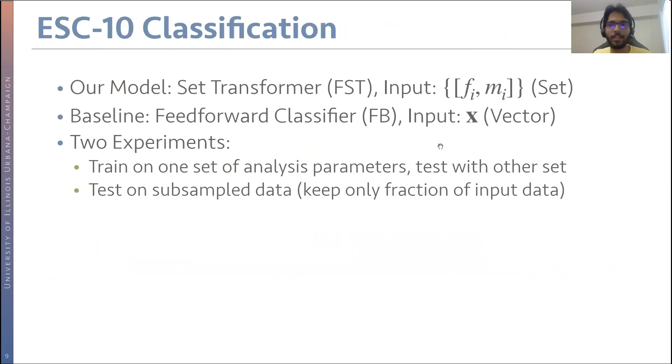We perform classification on the ESC-10 data set. We compare it with a simple feedforward baseline, which takes the spectral vector. Two experiments we performed: the first one is we train on one set of analysis parameters, with one set of window length and sampling rate, and then we test it with data which has been generated with other window rates or other sampling rates. The other experiment is to see if we can subsample our data or only keep a fraction of our input data and see if the model's performance is affected by that.